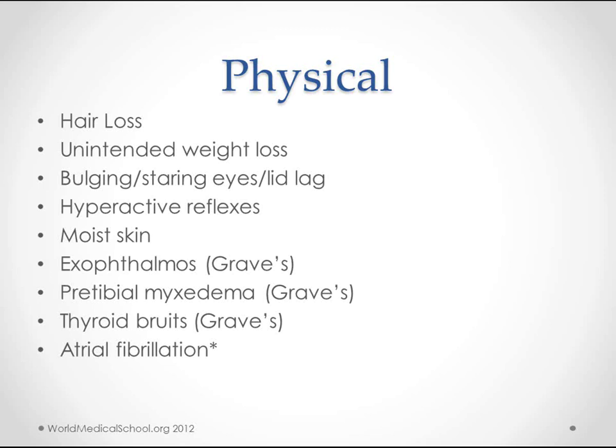On exam you'll also see hyperactive reflexes and moist skin. Pretibial myxedema and thyroid bruit are findings specific to Graves' disease — look up a picture of pretibial myxedema. AFib is an important point because it's fairly common in hyperthyroidism, and it's also fairly common to find hyperthyroidism when you test patients with AFib. I've heard that 10–20% of people with AFib are thyrotoxic, so new-onset AFib should at least prompt consideration of hyperthyroidism.